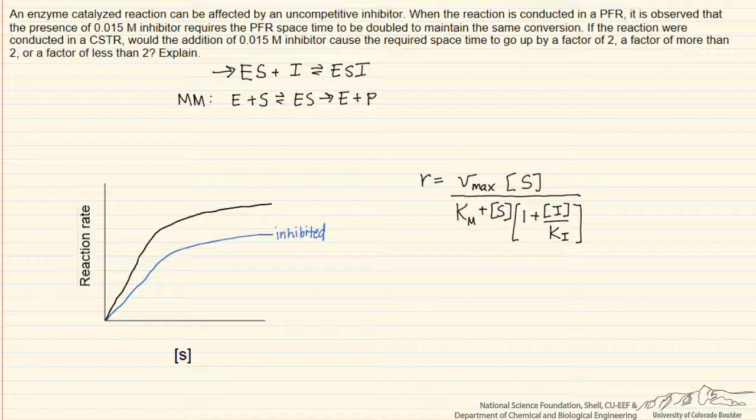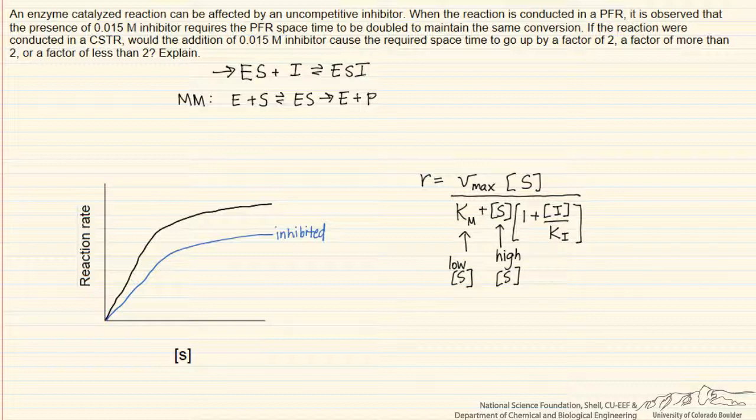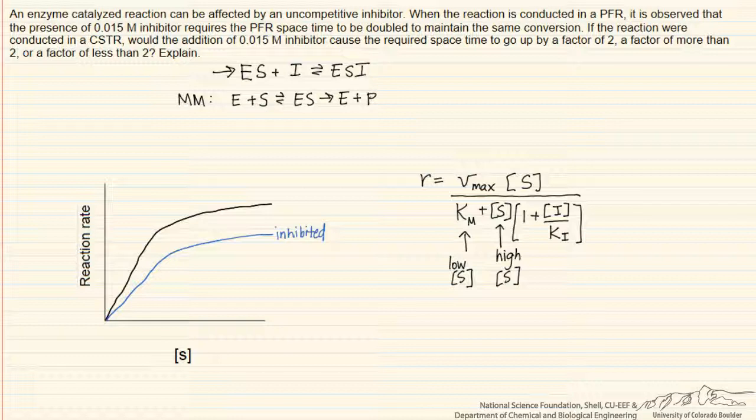That effect depends on whether we're in a high substrate concentration or low substrate concentration. In the limit of high substrate concentration, this term becomes much greater than Km, and the inhibitor will have its greatest effect. But in the limit of low substrate concentration, the Km term will dominate, and the inhibitor will have no effect when we get to a low enough substrate concentration.